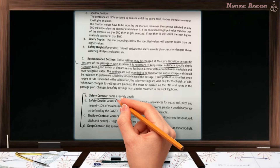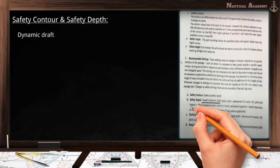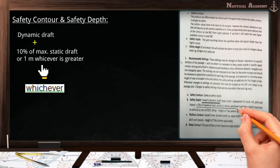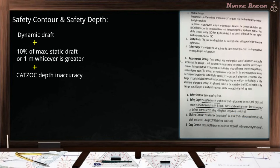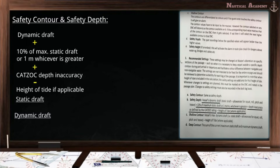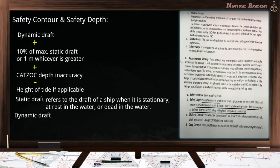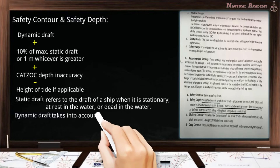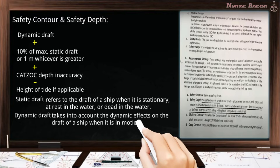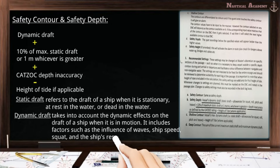For the safety contour and safety depth, they have the same value. To find the safety depth, we use the vessel's dynamic draft, plus 10% of the maximum static draft or 1 meter whichever is greater, plus the CATSOC depth and accuracy, minus the height of tide if applicable. Static draft refers to the draft of a ship when it is stationary or dead in the water. Dynamic draft, on the other hand, takes into account the dynamic effects on the draft when the ship is in motion — including factors such as the influence of waves, ship speed, squat, and the ship's response to sea conditions.